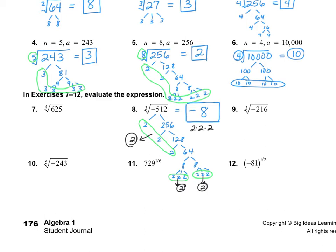Number 11 is 729 to the 1/6th, which is the same as the 6th root of 729. That's not something I'm really familiar with, so I'll use my calculator. Dividing by 3 works — 3 comes out and we have 243. Dividing by 3 again gives 81. I recognize 81 as 9 times 9, and we can break that down into 3s. My index is 6, so I need six 3s: 1, 2, 3, 4, 5, 6 — we've got all 6. So the answer for number 11 is 3.